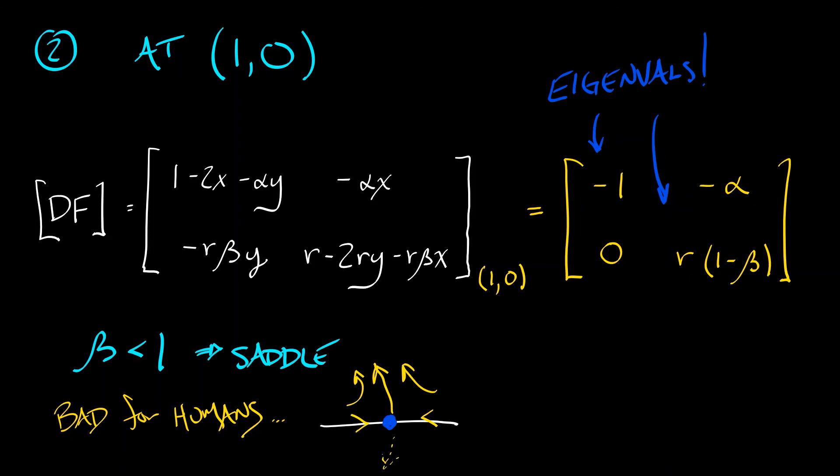On the other hand, if beta is bigger than 1, then that means you've got two negative eigenvalues. That means you have a sink. That means that humans always win no matter what. The robot population dies out, at least local to this equilibrium.